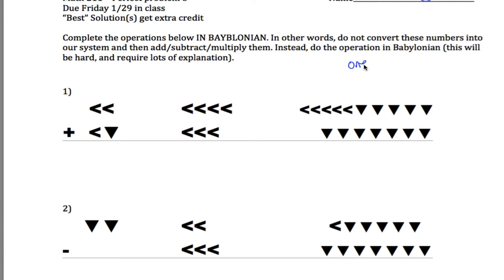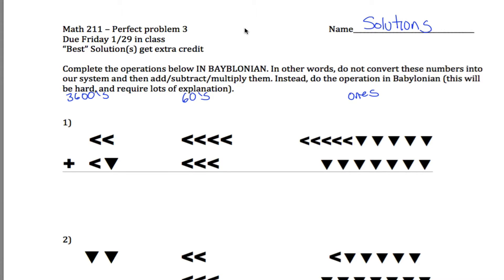So what you need to know is in Babylonian, this is kind of your ones place, this is your 60s place, and this is your 3600s place. Instead of 1s, 10s, and 100s like we do, they're in a base 60 system. And the other thing you need to know is that this less than sign is our equivalent of a 10. And this weird upside down triangle looking thing is mathematically what we think of as a 1.